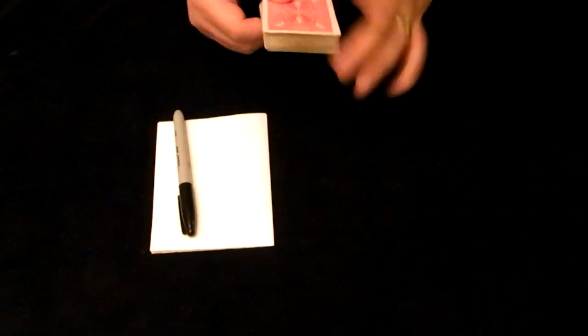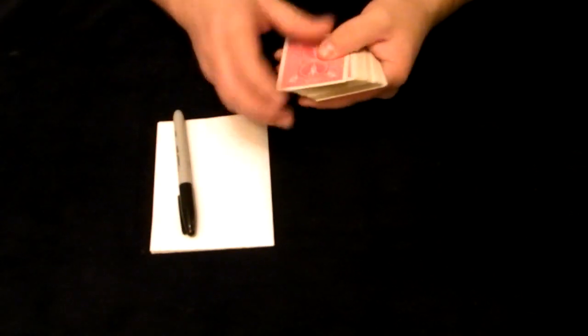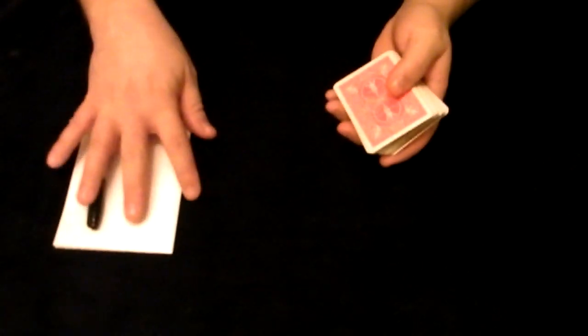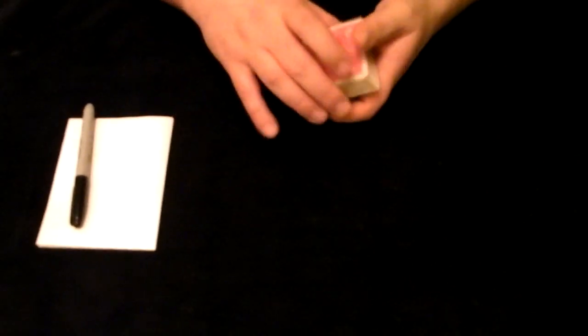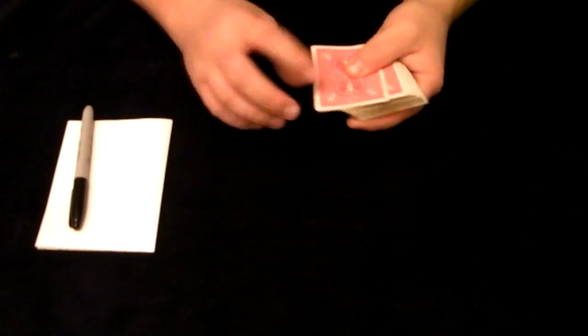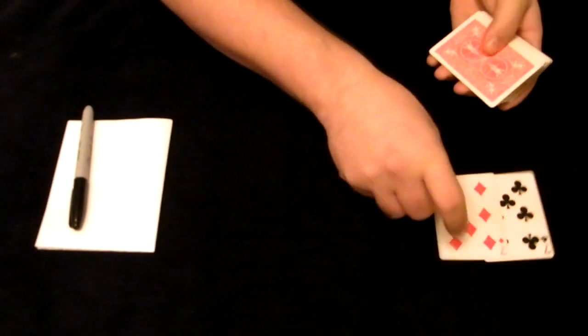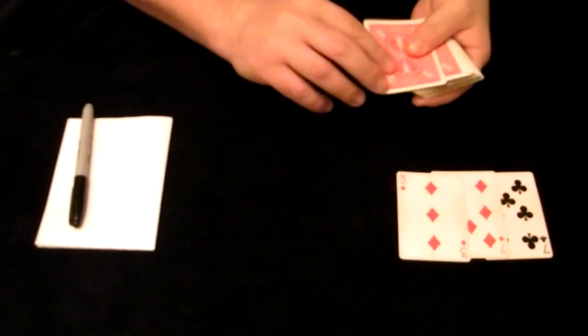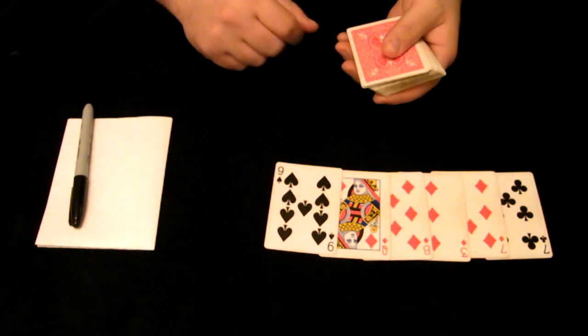We'll just take the deck of cards and pull out any jokers you might have. So I have two jokers, I'll get rid of those. And we're going to pull out six very lucky cards. The six lucky cards are the Seven of Clubs, the Seven of Diamonds, the Three of Diamonds, the Eight of Diamonds, the Queen of Diamonds, and the Nine of Spades.